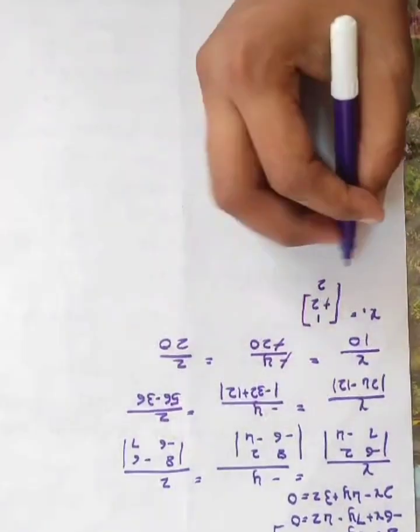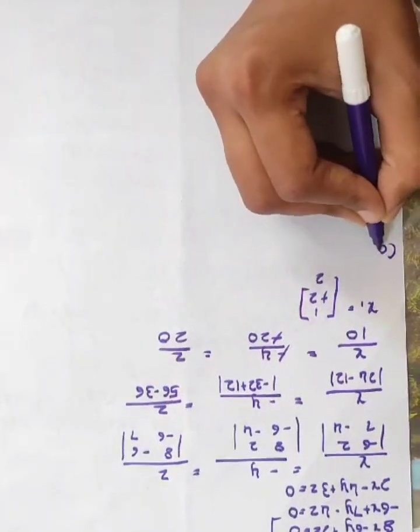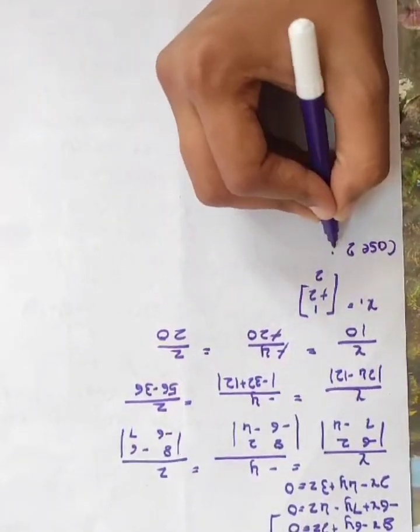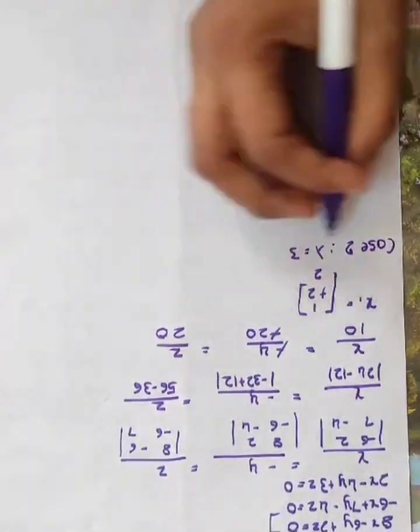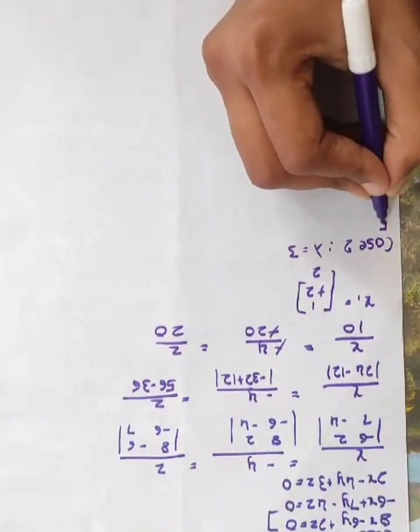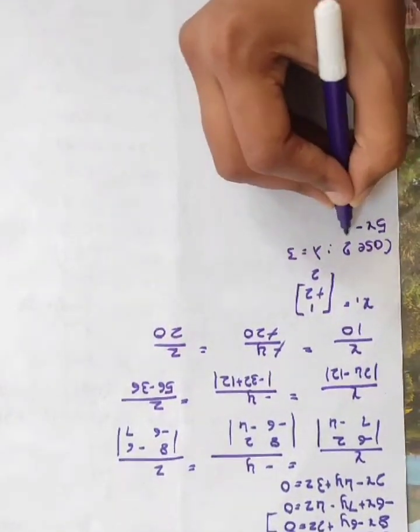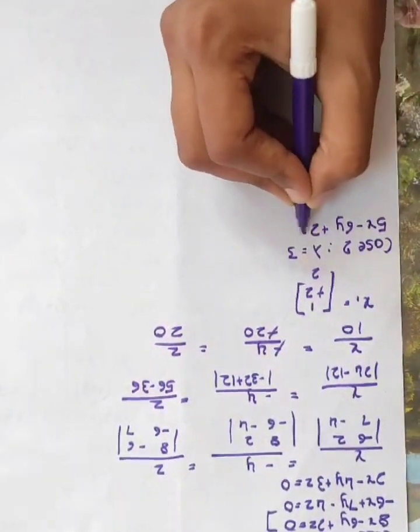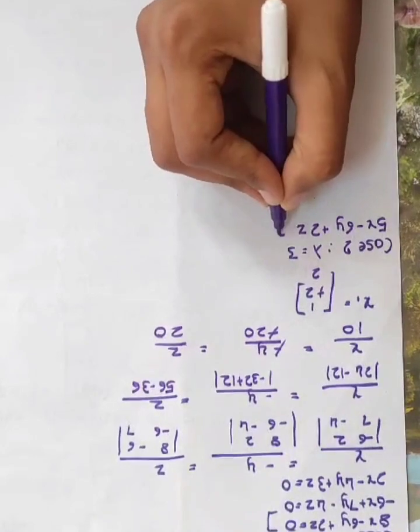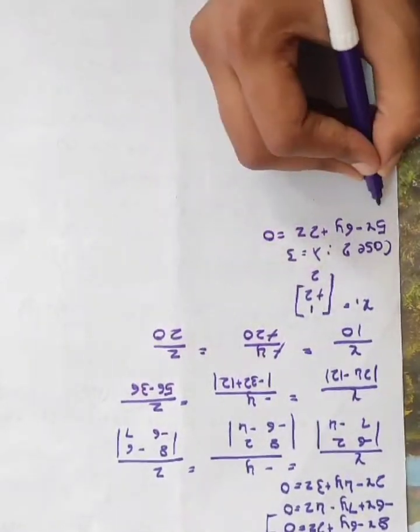In Case 2, when lambda equals 3, we get the equation: 5x minus 6y plus 2z equals 0.